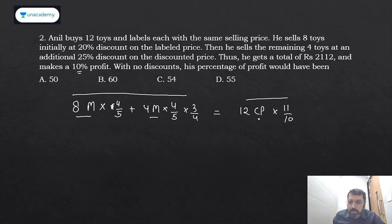If I assume that cost price was CP, so 12 × CP × 1.1 or 11/10 should give you selling price. See, all the information we have put in a single equation and we are not using the 2112—this is completely useless for this question. We do not need this.